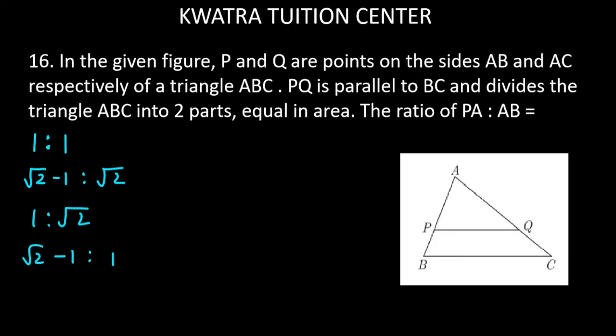In this case, triangle ABC is divided into two parts equal in area. We have triangle APQ and the other part equal. So what does this mean?